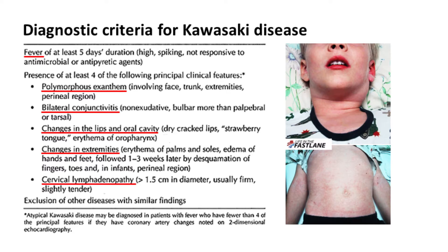Second: bilateral non-purulent conjunctivitis. Third: changes in the lips and oral cavity, such as cracked and erythematous lips and strawberry tongue. Fourth: changes in the extremities, including erythema of the hands and feet, and desquamation of the hands and toes one to three weeks later. Fifth: cervical lymphadenopathy larger than 1.5 cm in diameter, generally unilateral.